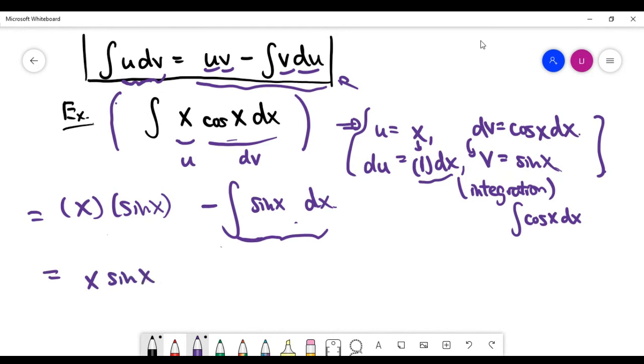So I write the answer down. The answer is x times sine x and minus, open bracket minus cosine x, close bracket. Of course, at the end, you can add the constant C to represent your answer in that way. So essentially, that's our final answer to this problem.